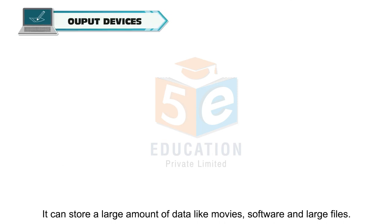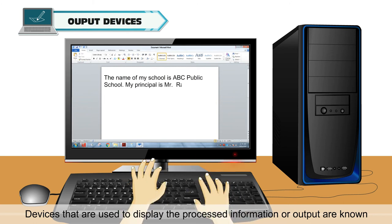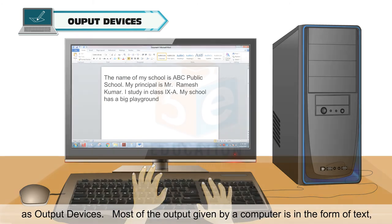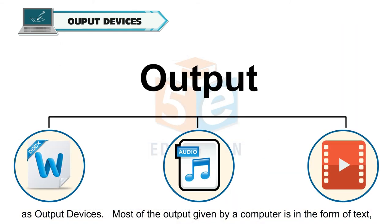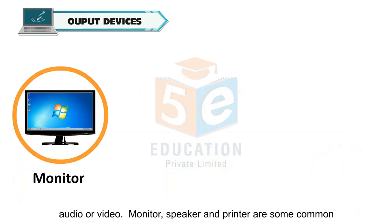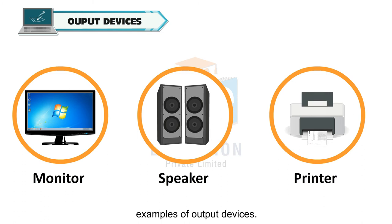Devices that are used to display the processed information or output are known as output devices. Most of the output given by a computer is in the form of text, audio or video. Monitor, speaker and printer are some common examples of output devices.